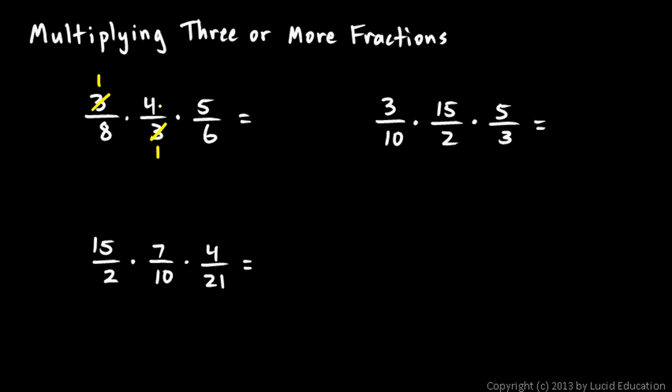And then this four could simplify with the eight or with the six, and it simplifies very nicely with the eight. The four and the eight can both be divided by four, so this becomes a one and a two. To get our answer, we multiply the numerators: 1 × 1 × 5 = 5, and we multiply the denominators: 2 × 1 × 6 = 12. So 5/12 is the answer.